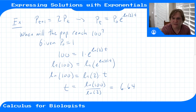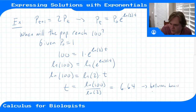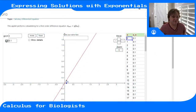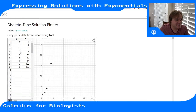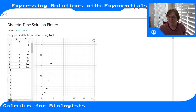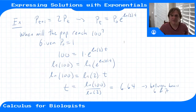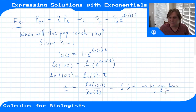So 6.64 hours exactly will give us 100 if the system is continuous. But since this is a discrete system, we're really looking between hours six and seven, because that's when we observe the population. Looking at the plot for r=2 growth, you can see the population crosses 100 between hours six and seven; in a continuous system it would happen at exactly 6.64 hours.